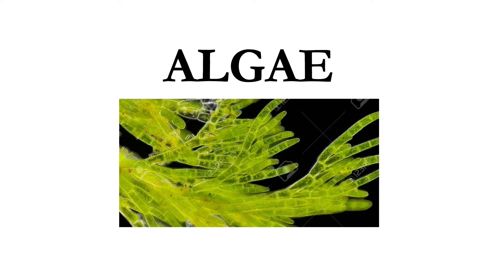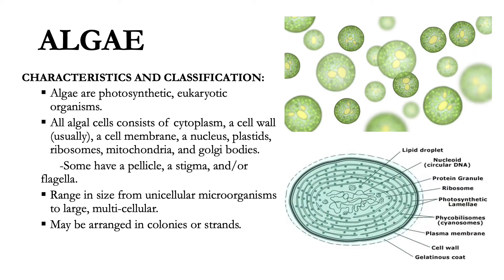The first eukaryote we will be discussing is algae. Algae are photosynthetic eukaryotic organisms classified in the Second Kingdom Protista. All algal cells consist of cytoplasm, a cell wall, a cell membrane, a nucleus, plastids, ribosomes, mitochondria, and Golgi bodies.